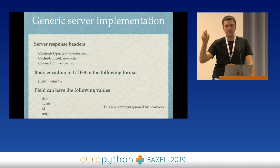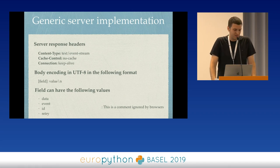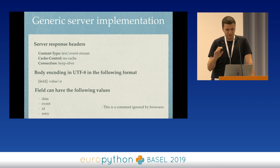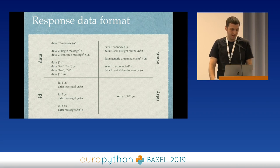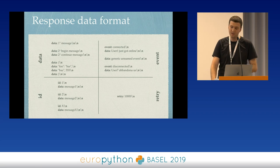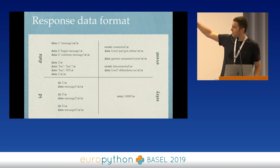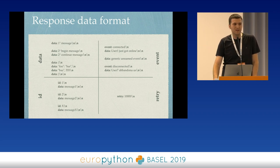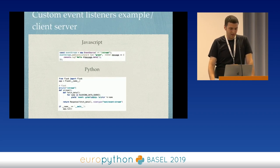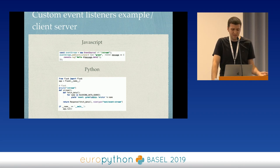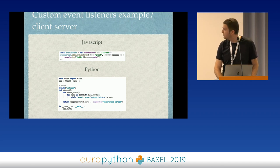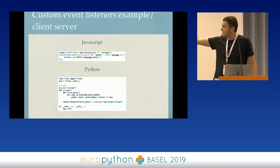'retry' is a value provided in milliseconds — the amount the client needs to wait between reconnections. This is how a data packet should look: messages end with a double newline, meaning the message is finished. You can combine the data, id, and event fields together; the retry field you just send once in a while when it makes sense. I also made a small example of a custom event listener — the only thing that changes is the yield part, where you just add an event name to the message.